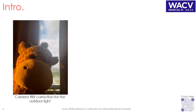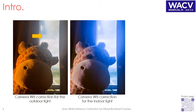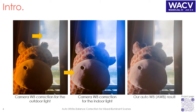Traditional white balance correction results in either a reddish tint in the final rendered image, as the auto white balance only corrected the outdoor lighting, or a bluish tint in the final image because the white balance corrected the indoor lighting. Here we show our auto white balance result that considers both lighting conditions.